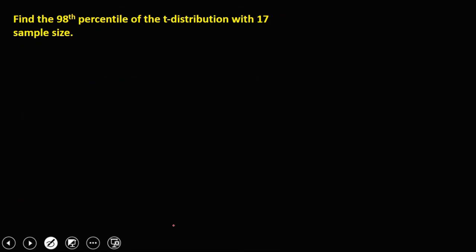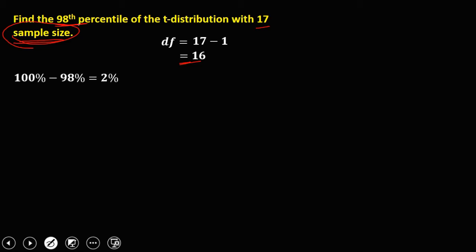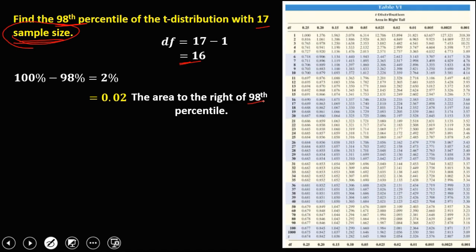Find the 98th percentile of the t-distribution with a sample size of 17. Since the given is sample size, we solve first for the degrees of freedom: df equals n minus 1, or 17 minus 1, so df is 16. The area to the right of the 98th percentile is 100 minus 98 equals 2%, which in decimal is 0.02. Using degrees of freedom 16 and area 0.02, the t-value is 2.235.